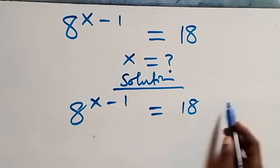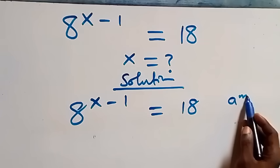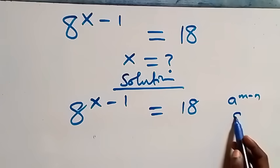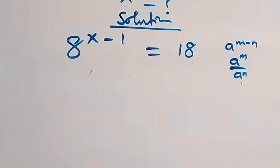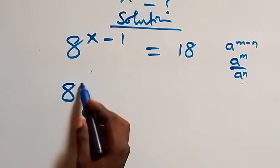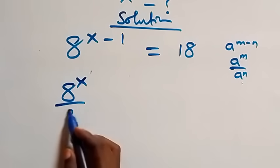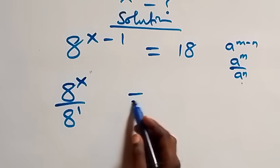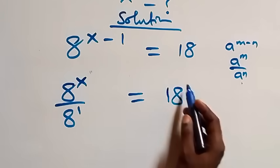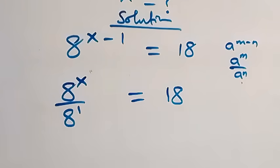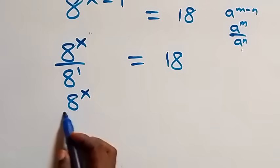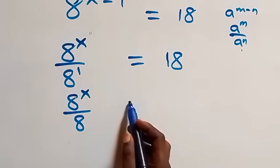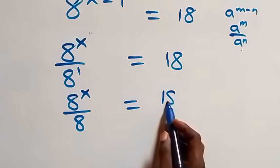What we have follows when we have a raised to power n minus n, which is the same thing as a raised to power n over a raised to power n. From here we can write this as a raised to power x over a raised to power 1 equals 18. This is the same as a raised to power x over 8 equals 18.